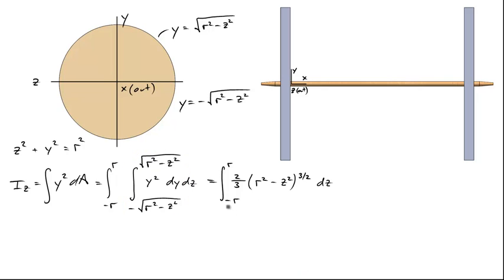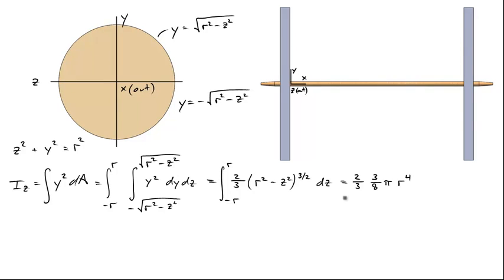We're left with this integral, which we integrate from z equals negative r to positive r. This simplifies to two thirds times three eighths pi r to the fourth, or that simplifies to what you read from a reference book: one fourth pi r to the fourth, which is the moment of inertia for a beam with a circular cross section.